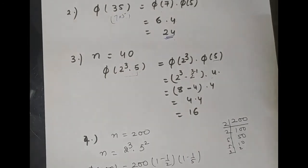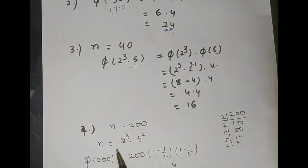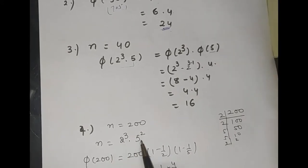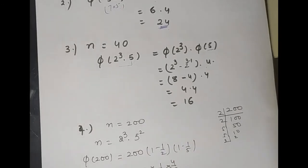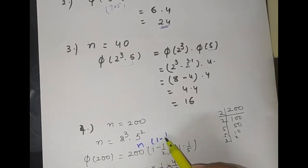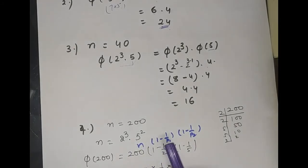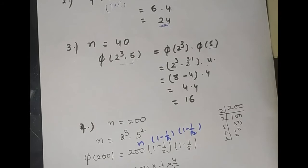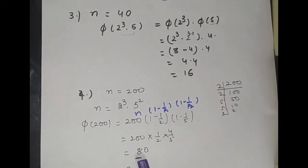Last formula example: if n = 200, expressed as 2³ × 5². Then φ(200) = 200 · (1 − 1/2) · (1 − 1/5) = 200 × 1/2 × 4/5 = 80. So φ(200) = 80.